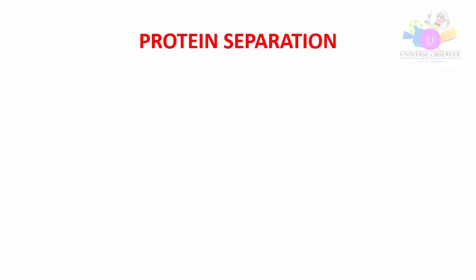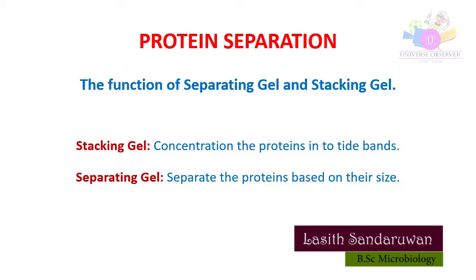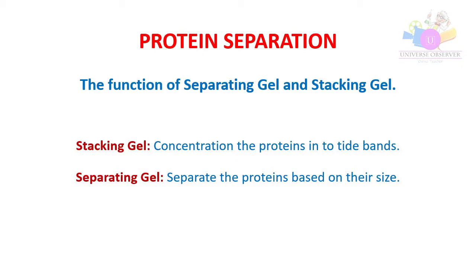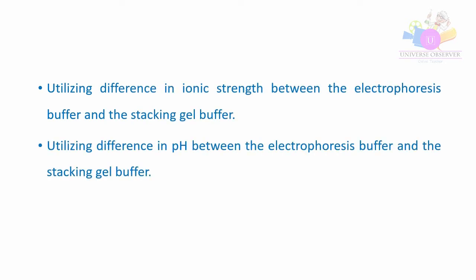Why are we using stacking gel and separating gel? Because we need to concentrate the protein sample into a sharp band in stacking gel before it enters the main separating gel. Otherwise we can't detect clear protein separation on the polyacrylamide gel. It is based on two factors: utilizing the difference in ionic strength between the electrophoresis buffer and stacking gel buffer, and utilizing the difference in pH between the electrophoresis buffer and the stacking gel buffer.